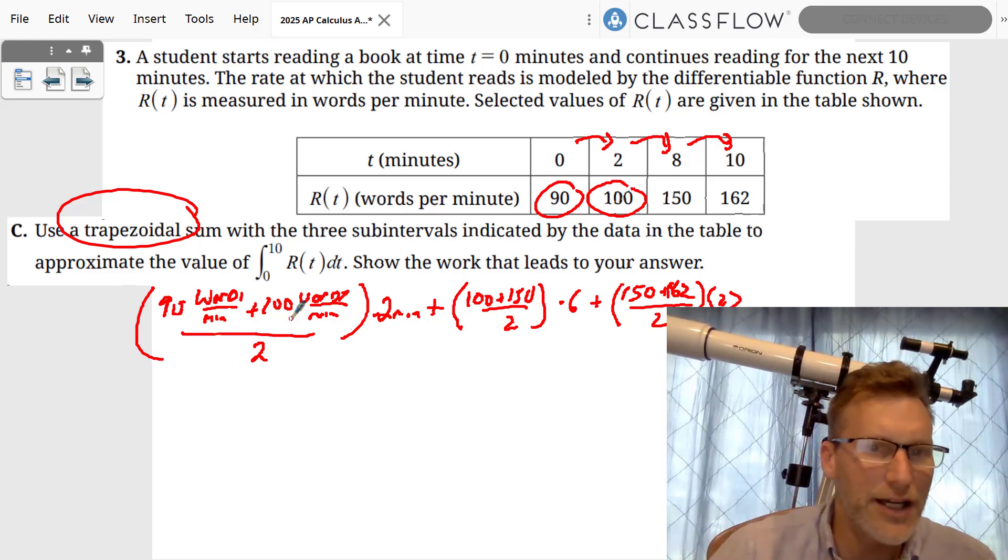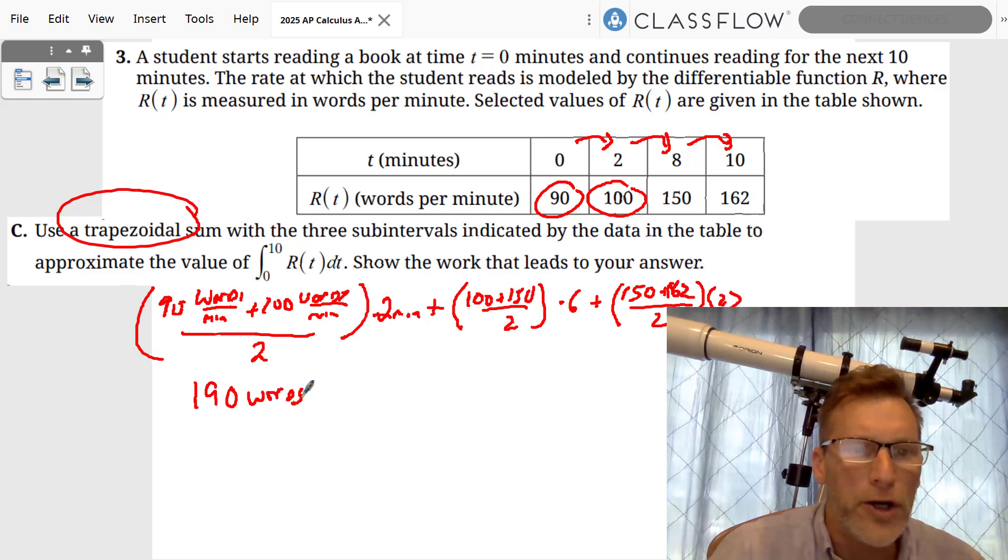And we do all of this math. You can see 90 plus 100 is 190, divided by 2 times 2 is 190. So you can see words per minute times minutes is words.